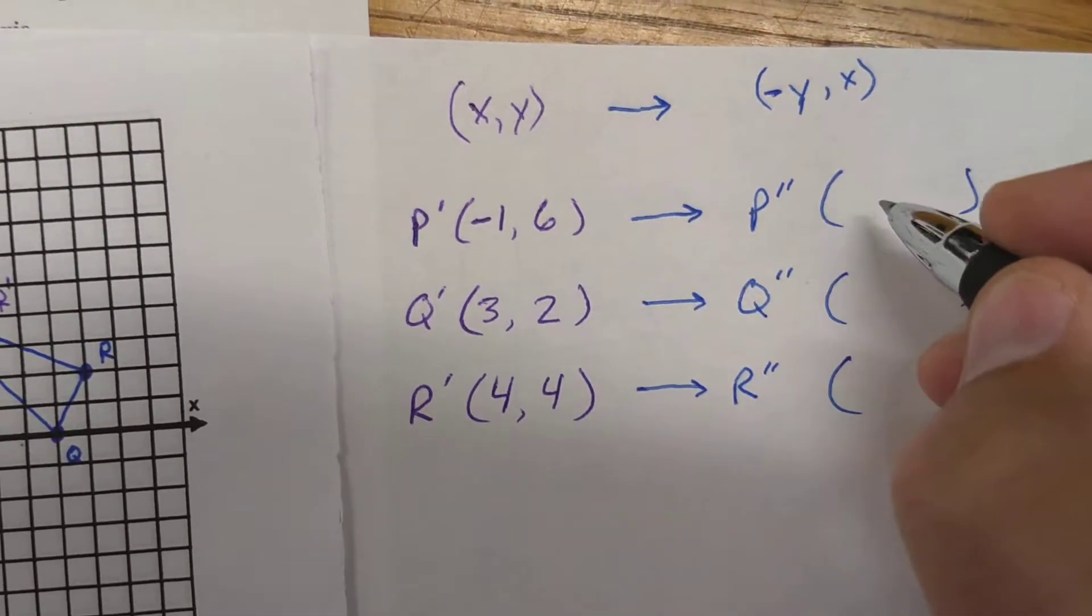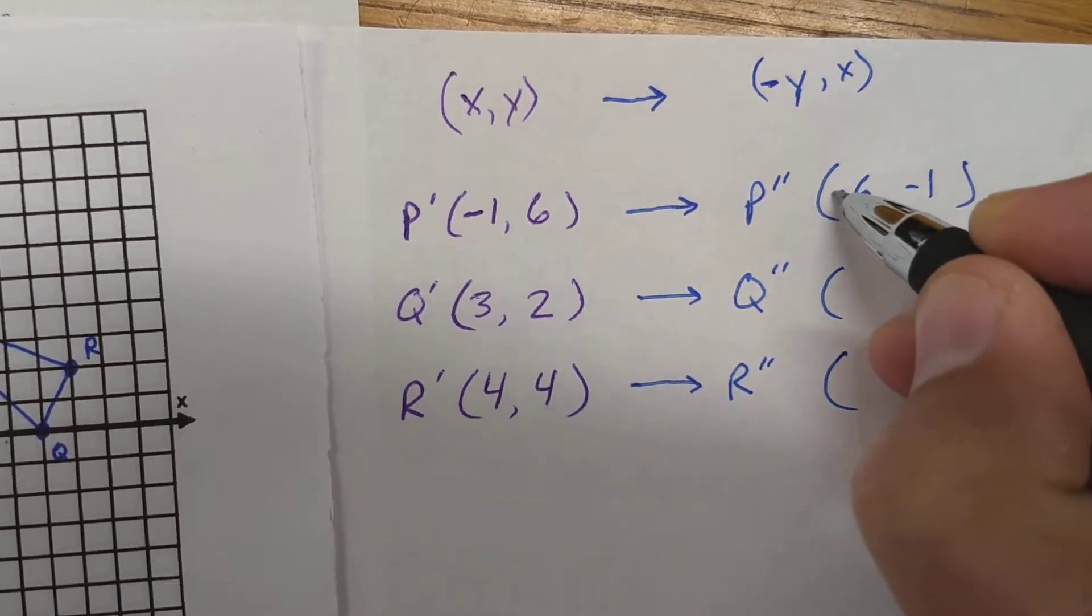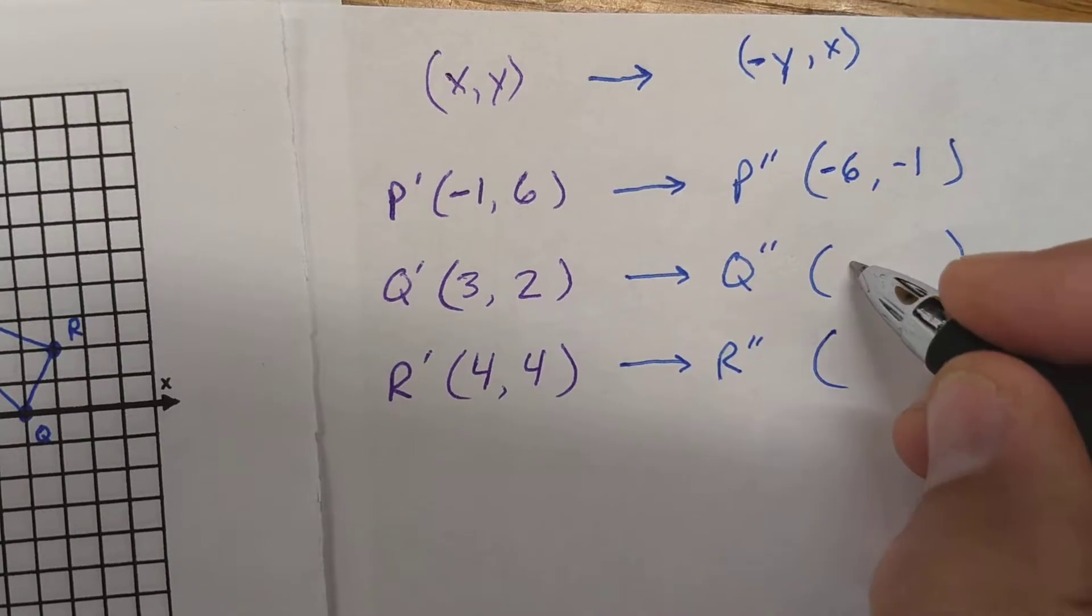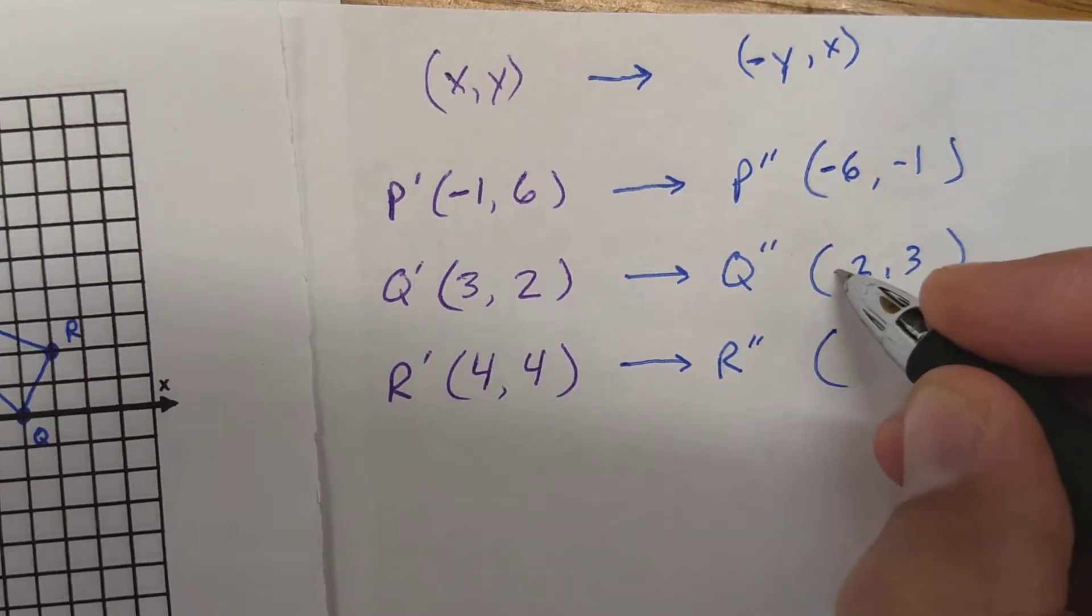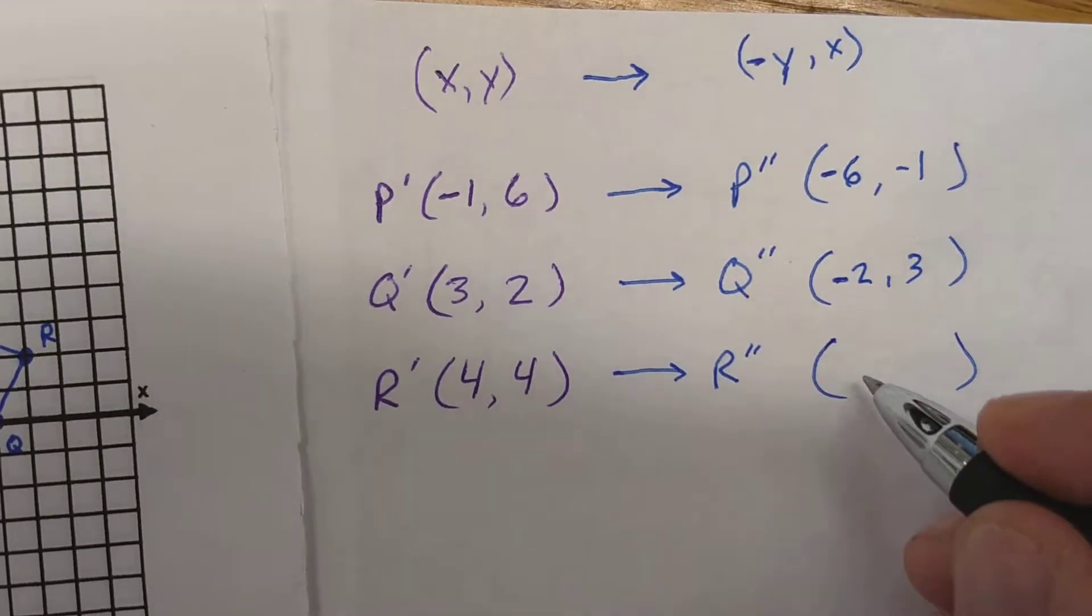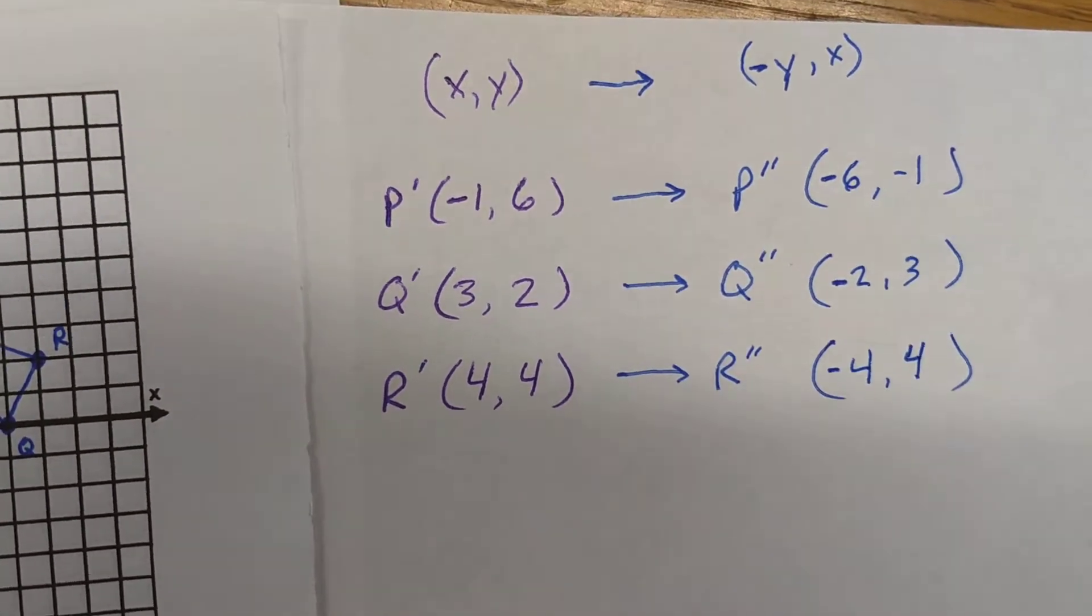We'll switch these two around. So it would end up being 6, negative 1, but then our y becomes negative. We would switch these two around. So 3, 2 becomes 2, 3, but the first one becomes negative. And 4, 4, you switch them around, it still looks the same, but now this first one becomes negative.